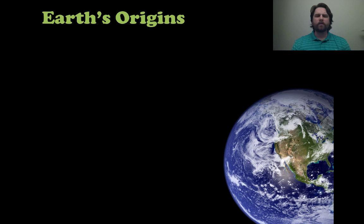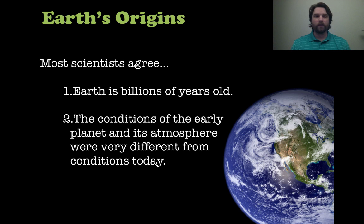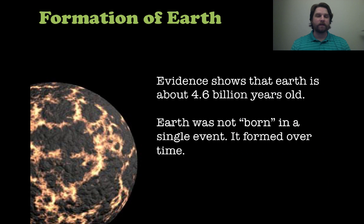So let's start talking about the origins of the Earth. Most scientists agree about a couple of things: they agree that the Earth is billions of years old, and they agree that the conditions of the early planet and its atmosphere were very different than they are today. So it's really old, and really different from today.